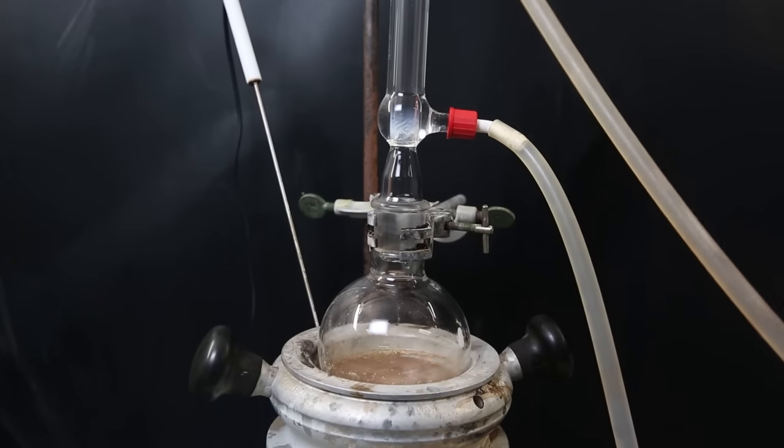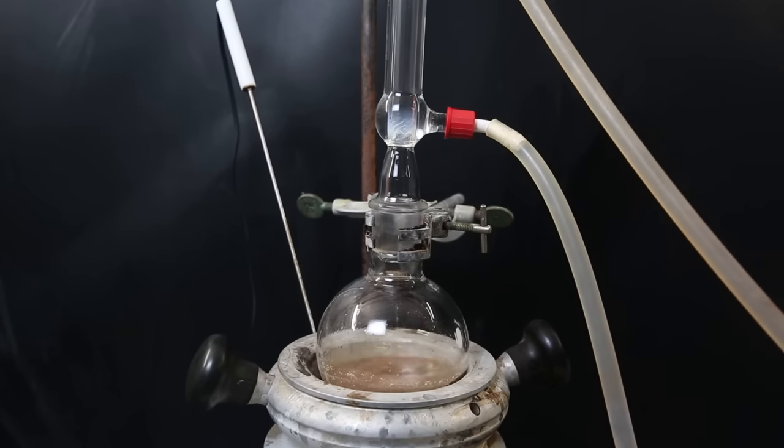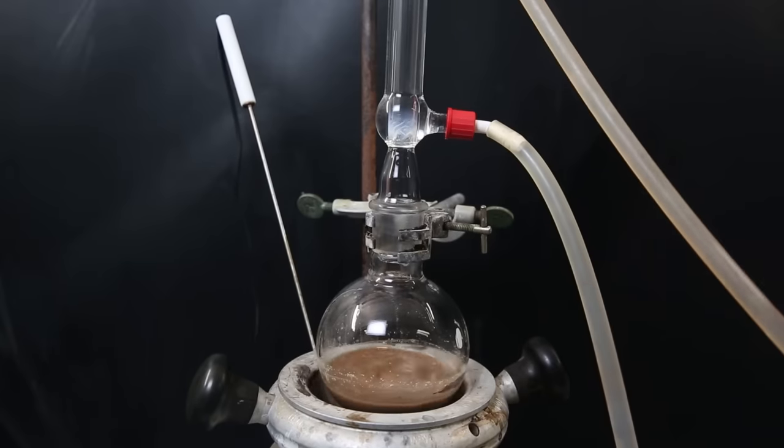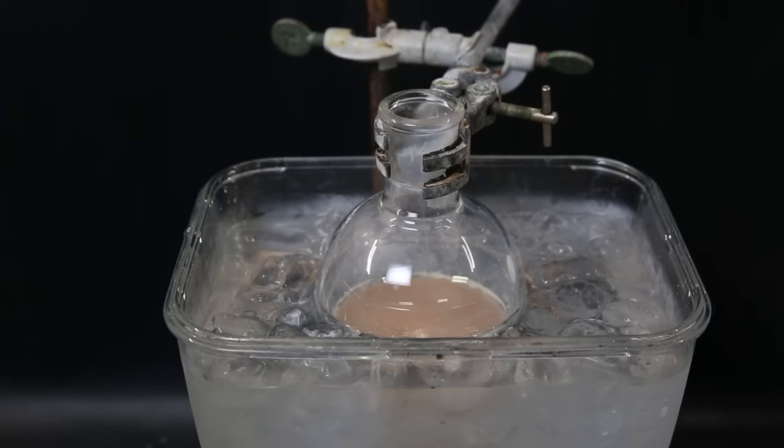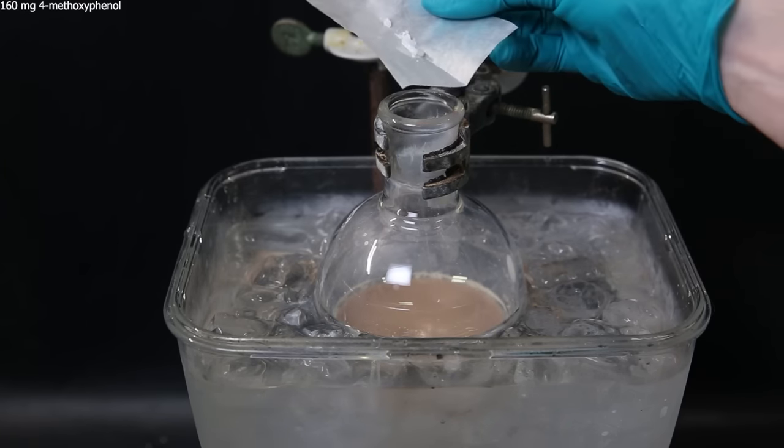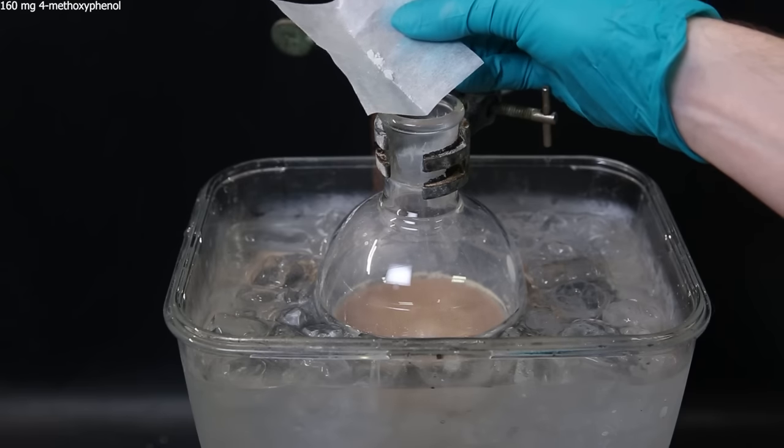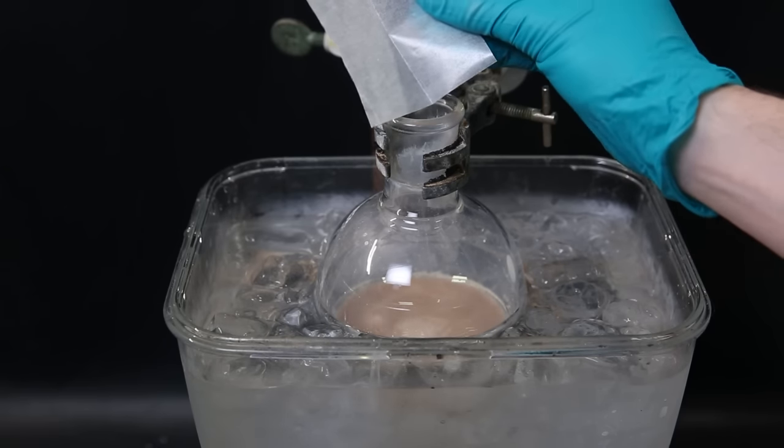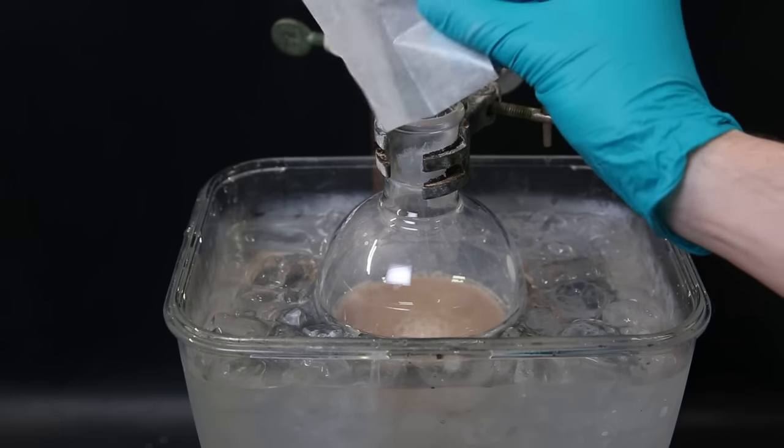When I come back the next day, the mixture has turned brown and the reaction should be finished. So I take the flask off heat and then set it in an ice bath. I let it cool down and then add 160 mg of 4-methoxyphenol, which will quench any radicals and work as a stabilizer for the tributyl tin hydride.